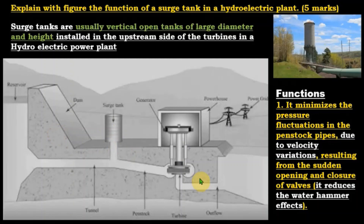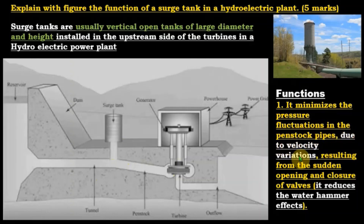The surge tank functions to dampen out pressure waves or pressure pulsations in the pipeline. It minimizes pressure fluctuations in the penstock pipes due to velocity variations resulting from the sudden opening and closure of valves — that is, it reduces the water hammer effects.